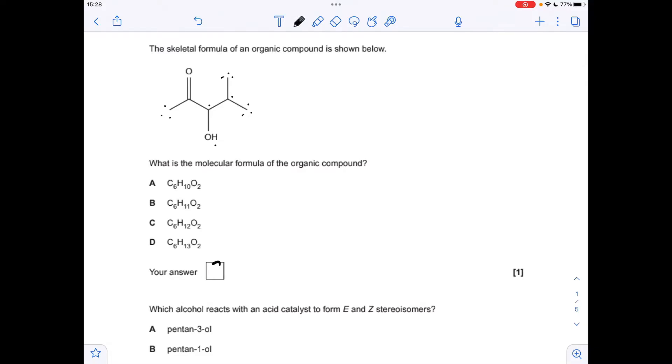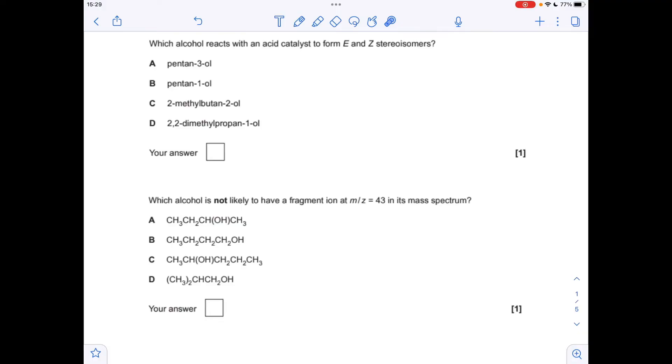Moving on to the next question. When you dehydrate an alcohol, you take the OH group and hydrogen from an adjacent carbon. You can't get EZ stereoisomers from a 1-ol because it's going to put the double bond at the end of the chain where you'll have two hydrogens bonded to that end carbon. So that leaves us with A and C as our options.